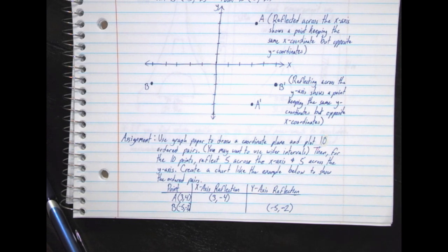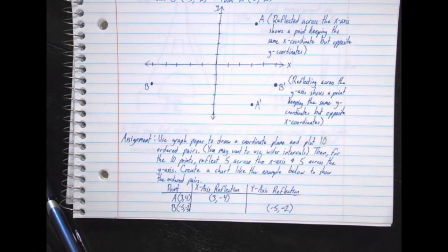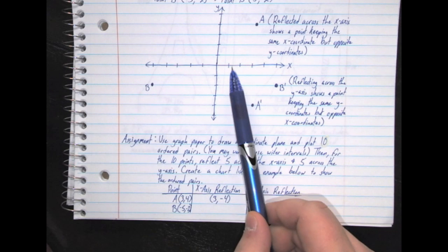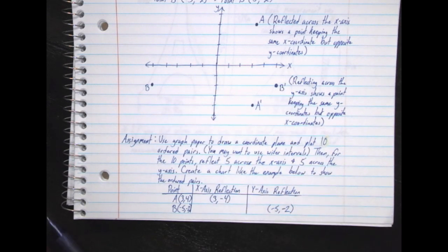So, use graph paper to draw a coordinate plane and plot 10 ordered pairs. That means you're creating your own graph, like this, except a lot bigger. Here, you are going to use a lot wider intervals than what I use, or if you're using intervals of 0, 1, 2, and so on, you're only moving by one unit per block.